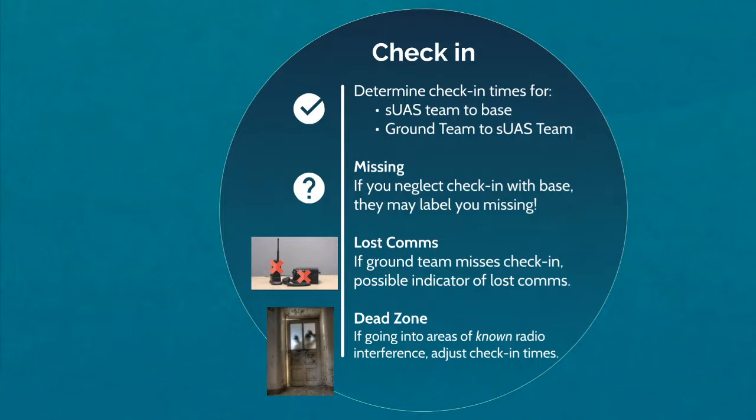If ground team has been missing their check-ins with the SUAS team, that may be an indicator of lost comms — use appropriate methods to deal with this. People familiar with the area of operations may be aware of dead zones, so factor those into your planning. Sorties traveling into dead zones often have reduced check-in requirements. You can only overcome dead zones by passing messages back to base through overhead CAP planes, or by interrupting your sortie to drive outside the dead zone and pass messages.